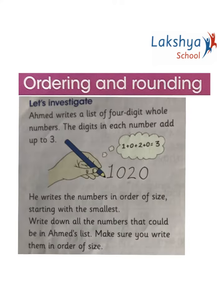Let's investigate: Ahmad writes a list of four-digit whole numbers where the digits in each number add up to 3. Remember, it must be a four-digit number and the digits must add up to 3. He writes the numbers in order of size, starting with the smallest. Write down all the numbers that could be in Ahmad's list, in order of size.